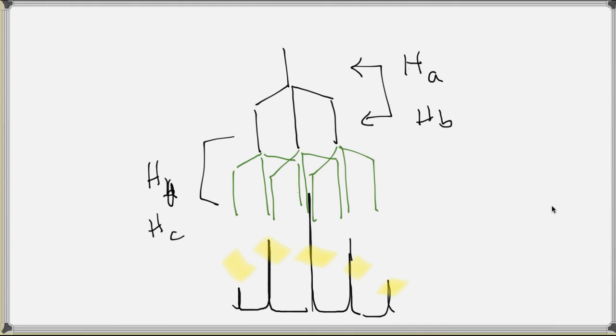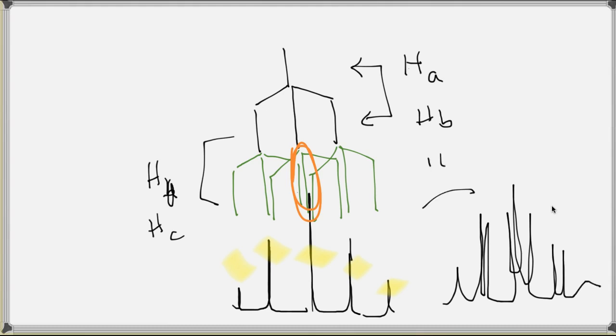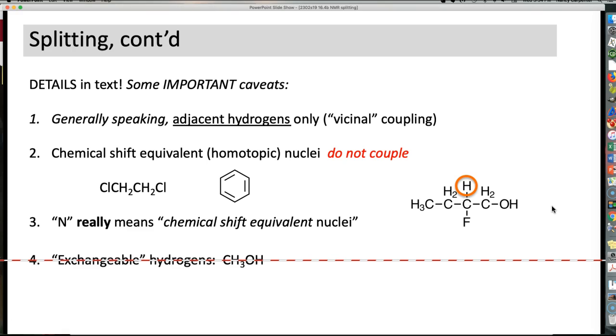Now, so what's the difference between two triplets and a pentet? Well, sometimes these don't line up perfectly. So you may have an overlapping set of triplets that is just off a little bit. It looks like that. So it gets kind of messy. So that's the reality of the N plus 1 rule. You have to pay attention to the nature of whether or not those neighbors are really chemical shift equivalent.